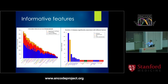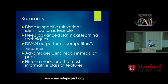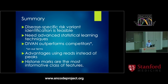Open chromatin comes in second, with histone marks ranking first — several histone marks appear at the top. In summary, our study demonstrates that disease-specific risk variant identification is feasible, but requires advanced machine learning techniques. Our method DIVINE seems to outperform competitors, and it appears advantageous to use read counts instead of binary peaks as features, with histone marks being the most informative class.